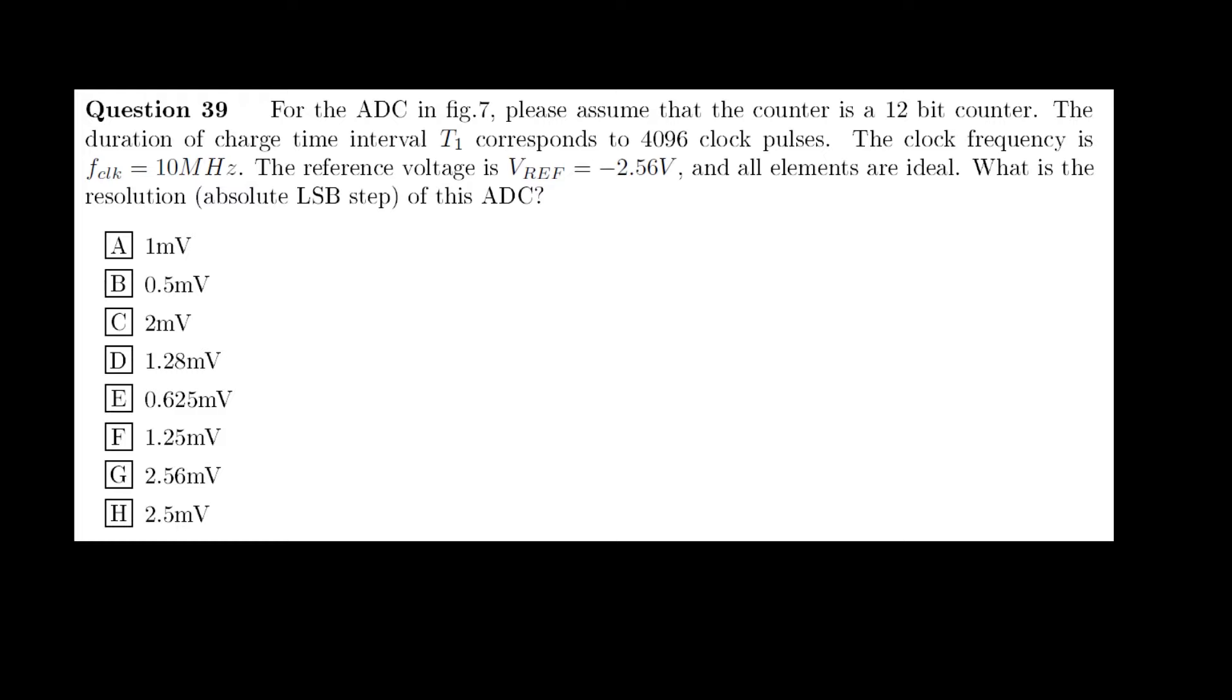Eight options are given for this resolution. To calculate the resolution, a good starting point would be to write down the equation that we derived in question 37. Now here we should note that the period T1 is a fixed period and that's by definition the maximum number of counts, which we'll call mx, times the clock period, so that's TCLK, or in other words the maximum number of counts over the clock frequency.